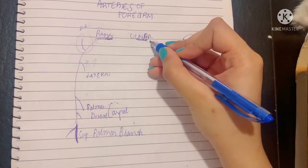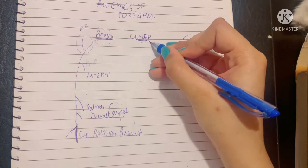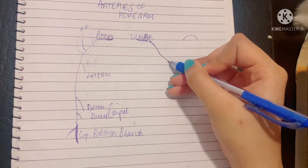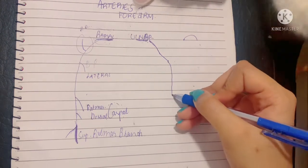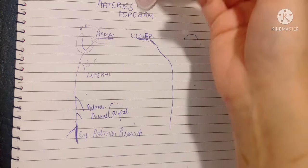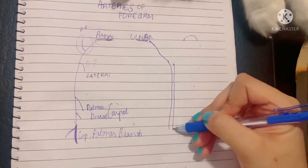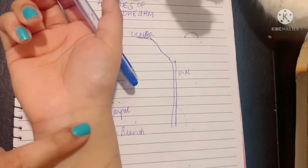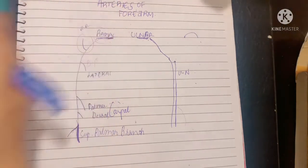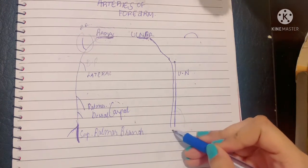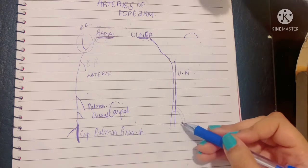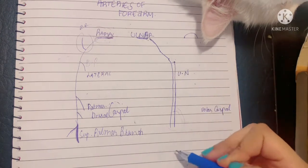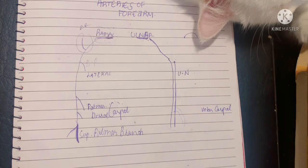The ulnar artery begins from the cubital fossa as the deeper branch, passing deep to both heads of the pronator teres. In the upper part it runs obliquely downwards, after which its course is mostly vertical, running medially in the forearm. The ulnar nerve lies even more medial to the ulnar artery. When they reach the wrist, the ulnar vessels and nerve pass superficial to the flexor retinaculum but deep to its superficial slip — the volar carpal ligament — and the ulnar artery enters the palm.